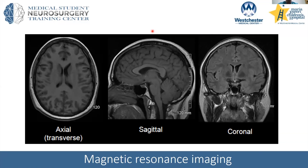Besides fractures, masses, infarcts, and hemorrhages — what other features should you look for before labeling a CT as normal? I'll show a few other pathologies, more so on MRI, but the concept applies to CT. Radiologists are very systematic in the way they look through studies, and I'll show a few more pathologies that should help with that question.